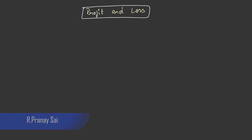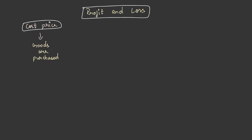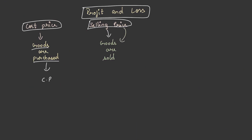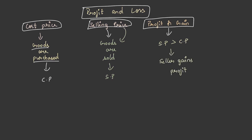Let us understand the different definitions involved in profit and loss. The price at which goods are purchased is known as the cost price, represented by CP. The price at which goods are sold is known as selling price, represented by SP. When the selling price is greater than the cost price, the seller gains profit.